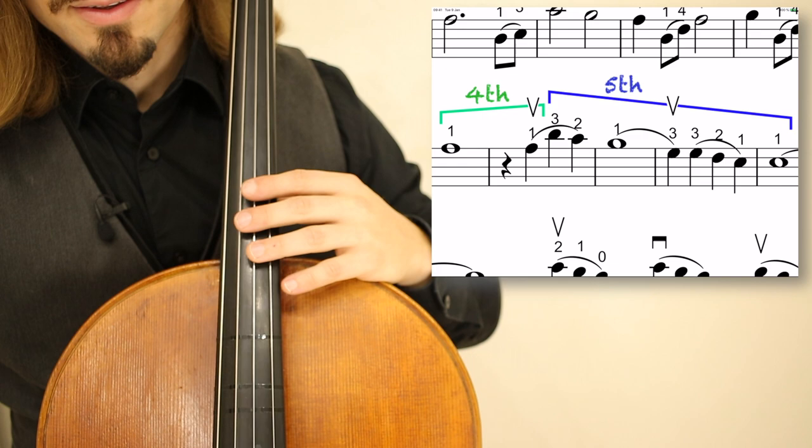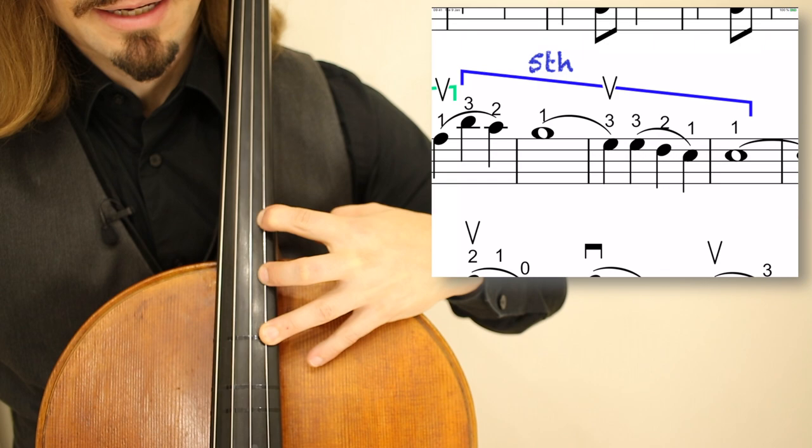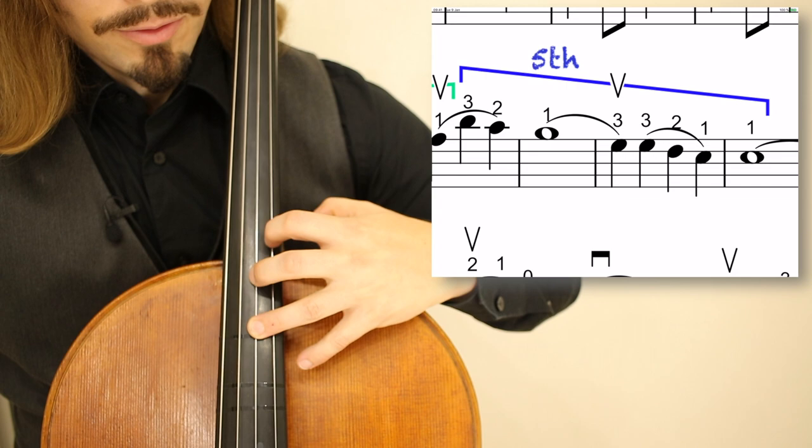The third beat of measure 50 brings us to the fifth position. You start in fourth, shift up, three on the A, two, one. It's a big spread. We have whole steps in between the notes. And then we go to D, shifting over for the D, C natural, B natural.